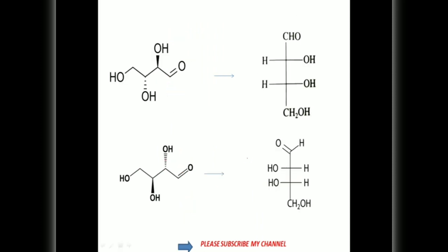Now we can apply this to a structure. The parent chain is present in a zigzag structure. It is a CHO group and a CH2OH group — CHO must be written on the vertical line, so CHO at the first carbon and CH2OH. Now this OH is above the plane and directed upward, so it must be written on the right side. And this OH is below the plane and directed downward, so it must also be written on the right side. This is the exact Fisher projection of that structure.